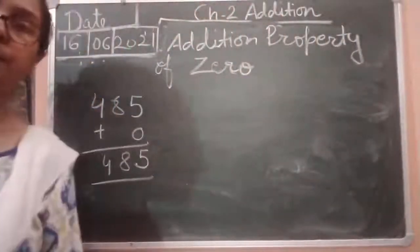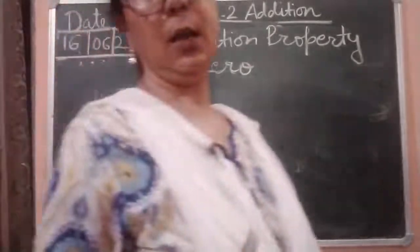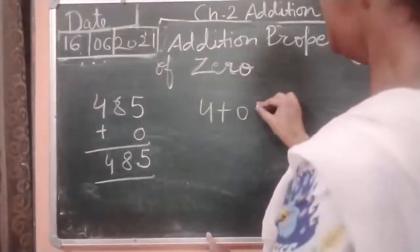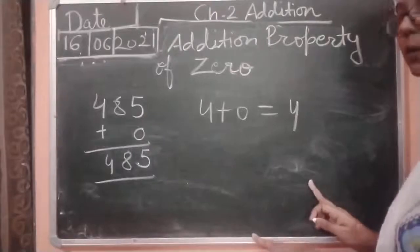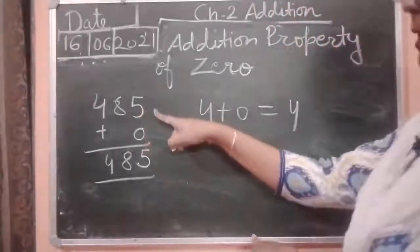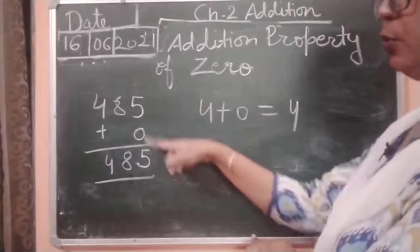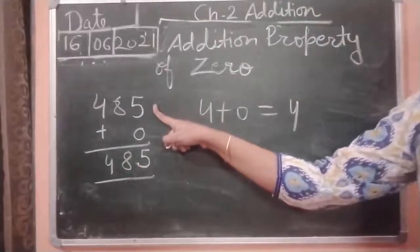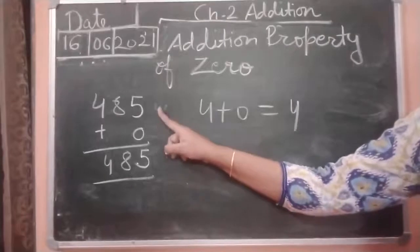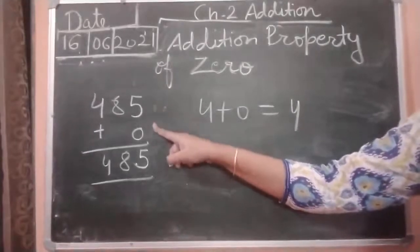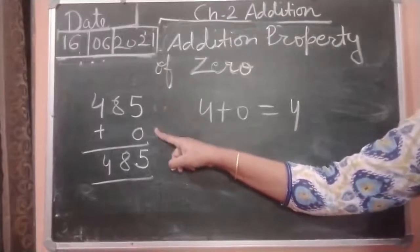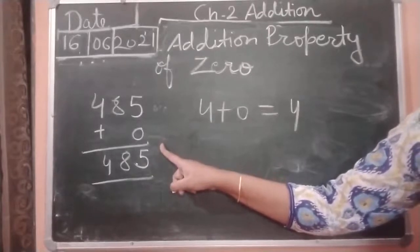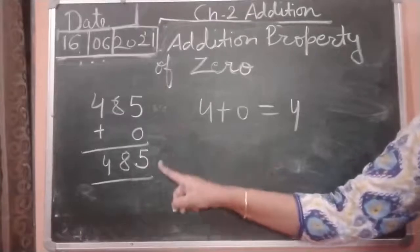If we are adding zero to any number, we will get that number again. For example, 9 plus 0 — the sum of nine plus zero will remain the number itself, nine. When zero is added to a number or a number is added to zero, the sum is the number itself.